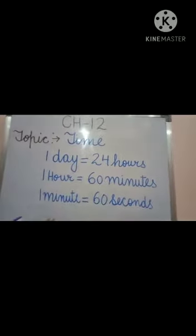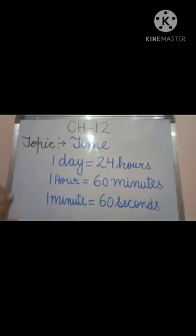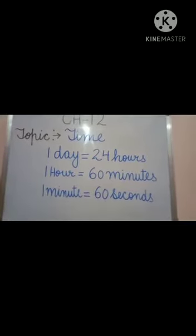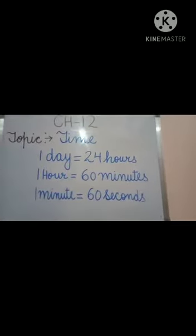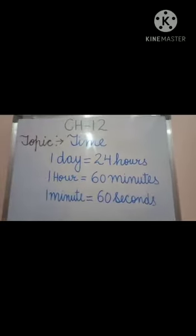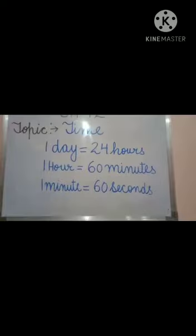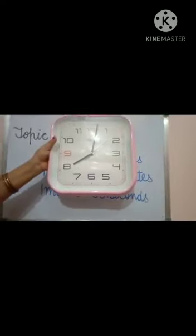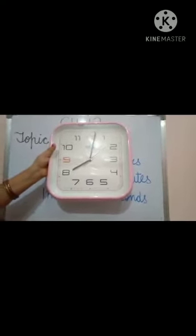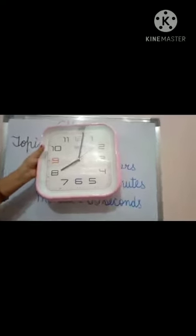Now I will tell you how many numbers are there in a clock. There are 12 numbers in a clock.